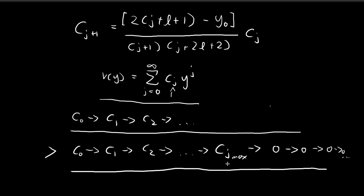j_max can be any number we choose. For example, if j_max equals two, our coefficients start from c₀, reach c₁, reach c₂, and then c₃ will be equal to zero because j_max is equal to two.